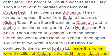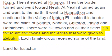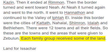Inside this border were the cities of Kadath, Nahalal, Shimrin, Idalah, and Bethlehem. There were twelve towns and all their fields. So these are the towns and the areas that were given to Zebulun. Each family group received some of the land.